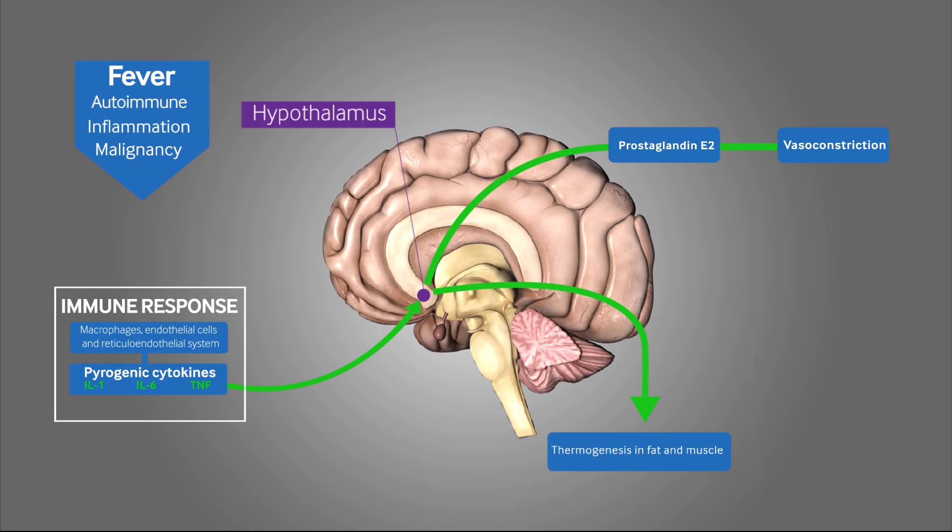Shivering, which increases heat production, may also be induced. Shivering is not always present during a fever, but seems to occur when there is a sharp increase in temperature in order to match the new set point, as witnessed during rigours.